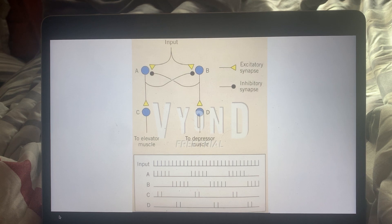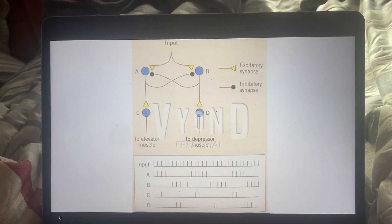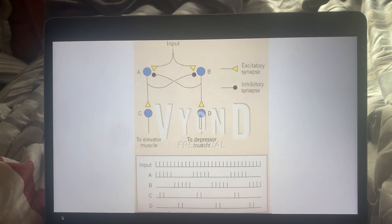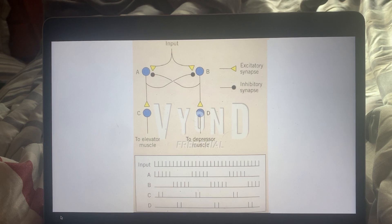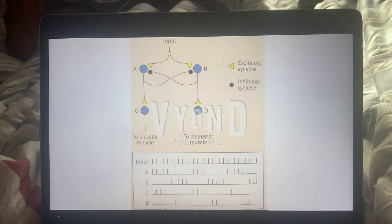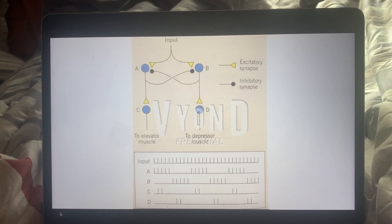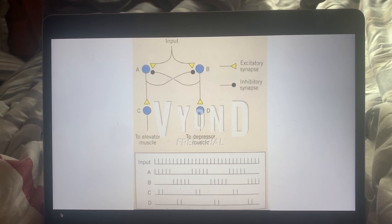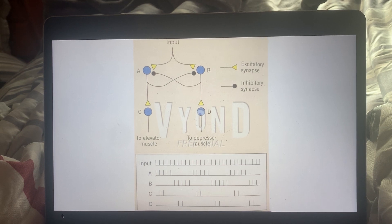Over time, however, with this constant stimulation of A, there will be an overall fatigue. This fatigue will lead to less inhibition of B. When there's less inhibition of B, this will lead to a greater stimulation of B and therefore a greater stimulation of D, leading to a depression muscle being activated.